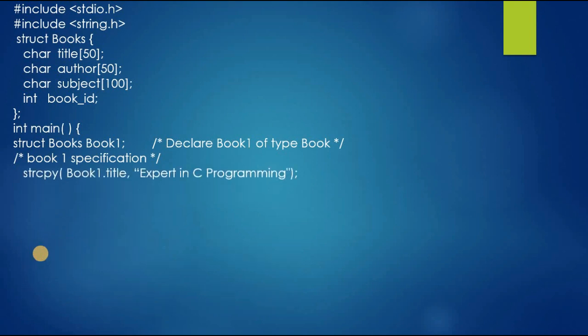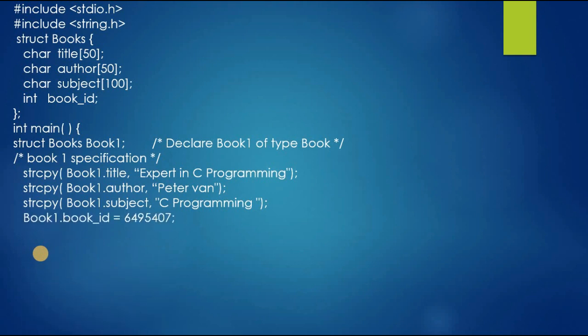By using the string copy function we define the book title. Then we use string copy function again for the book author. For the subject we use the string copy function again. Then book1.book_id is given with a number.